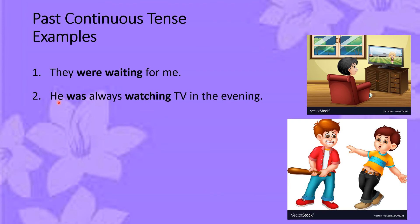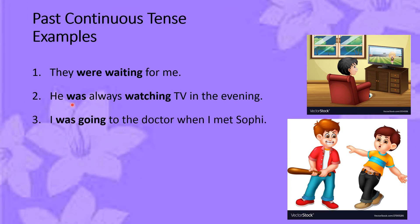Look at the second sentence: 'He was always watching TV in the evening.' You can see that this was the persistent habit of the boy, so the past continuous tense has been used. Have a look at the third example: 'I was going to the doctor when I met Sophie.' Here you can see that 'I was going to the doctor' is a clause formed using the past continuous tense.